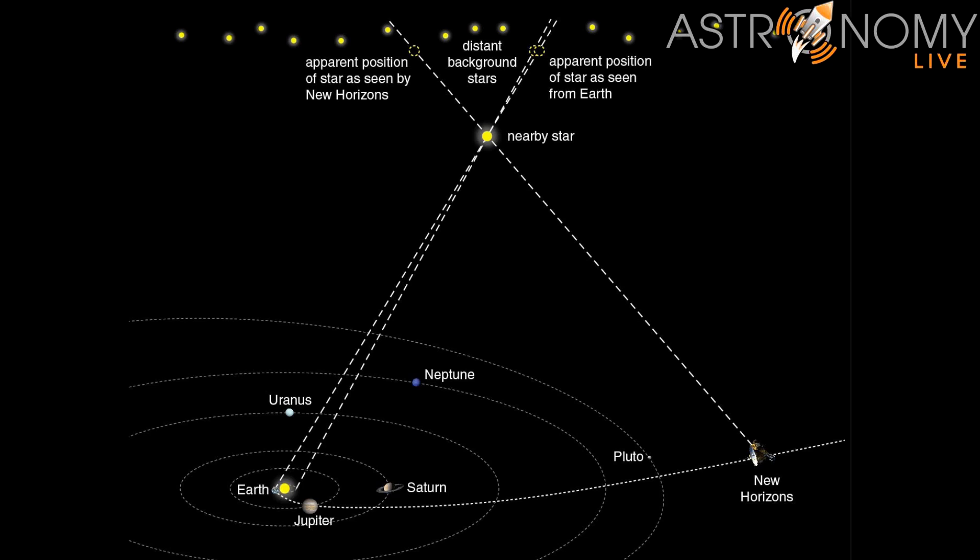Hi folks, Astronomy Live here. Back on April 23rd, the New Horizons probe took a picture of the nearby star Wolf 359. I took a picture of that star timed such that the light that left that star arrived at my telescope at the same moment that it also arrived at the New Horizons probe.